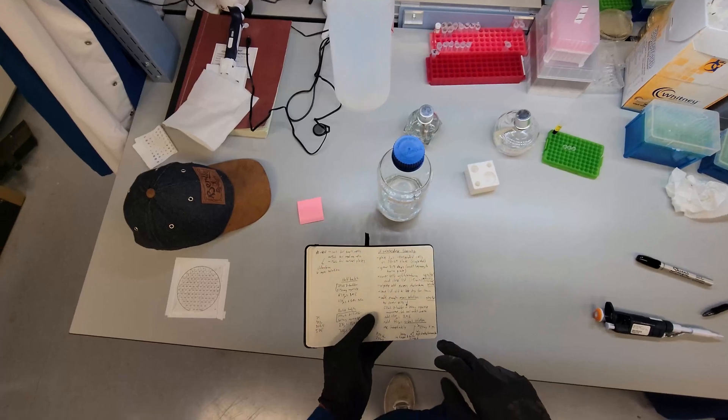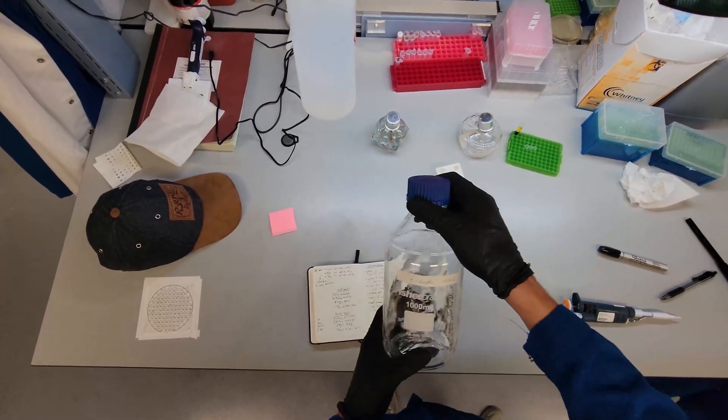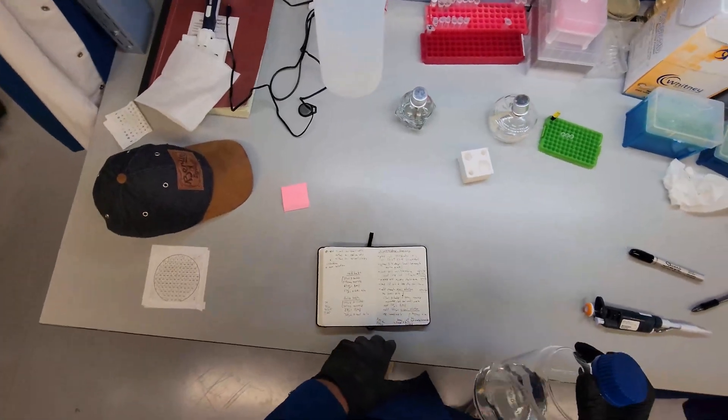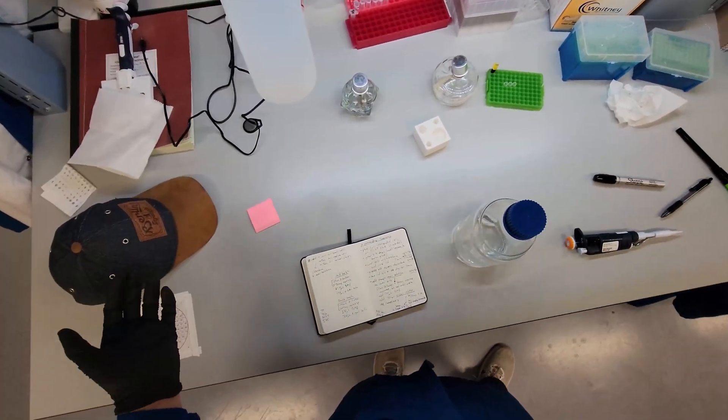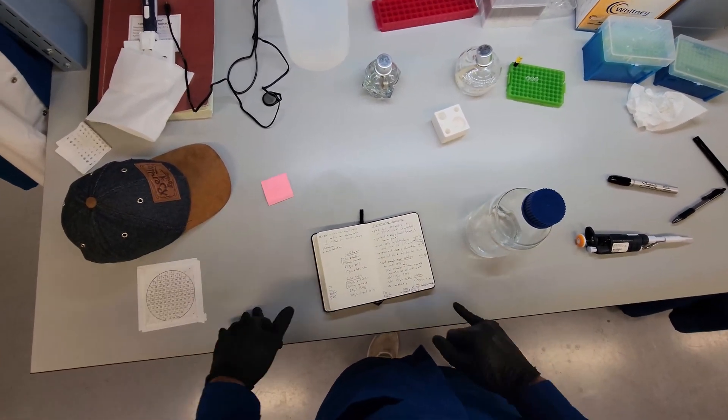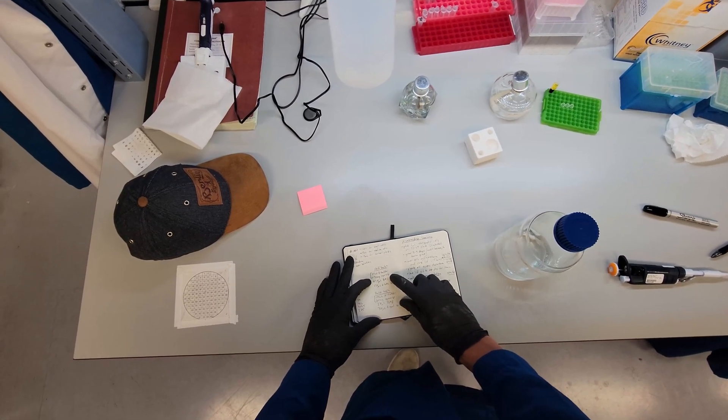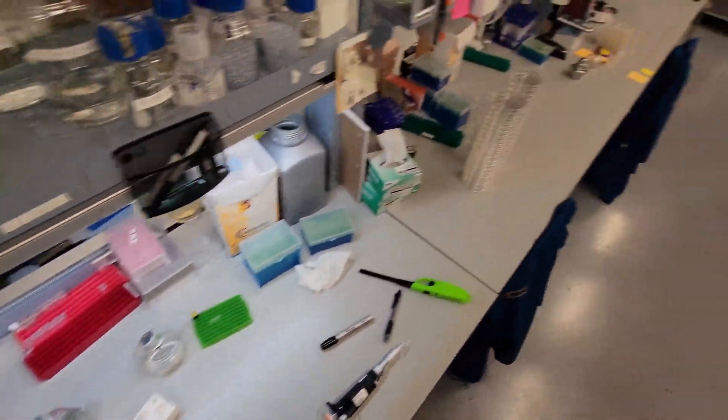And we need to make our agarose solution. So, this is Z-Buffer. You can look it up on the Cold Spring Harbor website. We're only doing five wells, so we just need a tiny batch. So, I'm going to make a half batch, 25 mils of Z-Buffer, 150 milligrams of agarose. So, let's get that started.